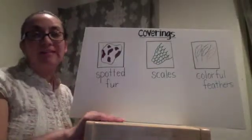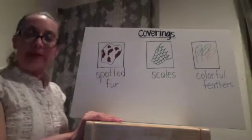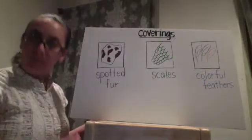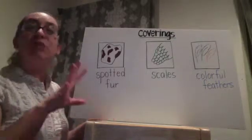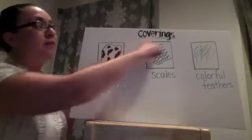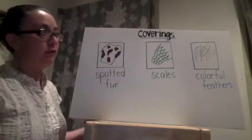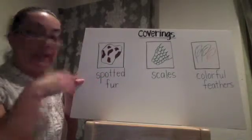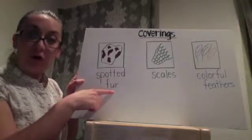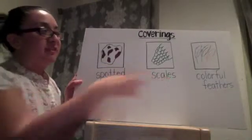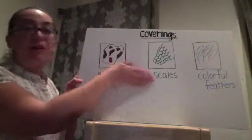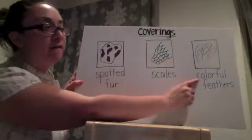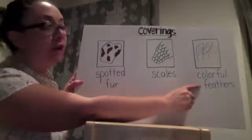There are far too many examples of successful adaptations in terms of Rainforest body parts to cover all of them, but I want to show you a snapshot of a few. In terms of coverings — what covers an animal's body — we've seen animals in the Rainforest successfully hide with their spotted fur, successfully slither across places with their scales, and find mates because of their colorful feathers.